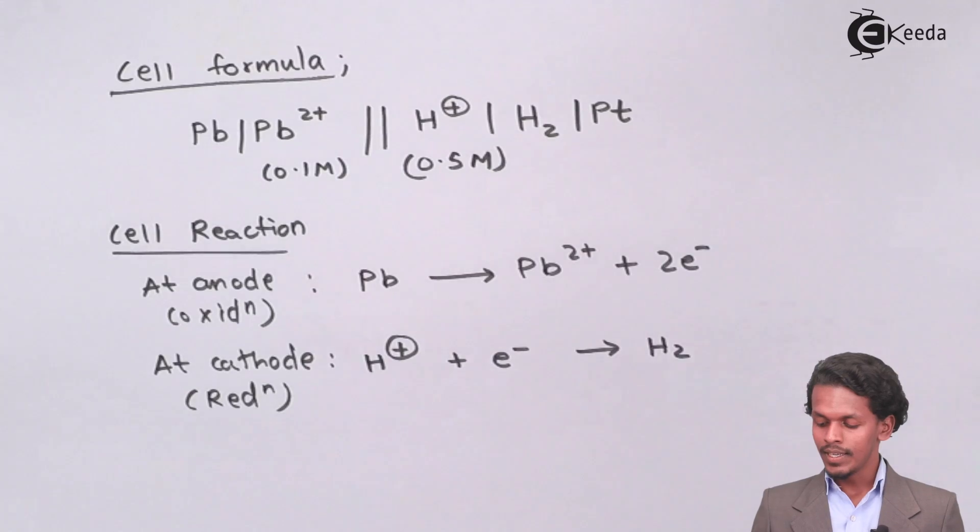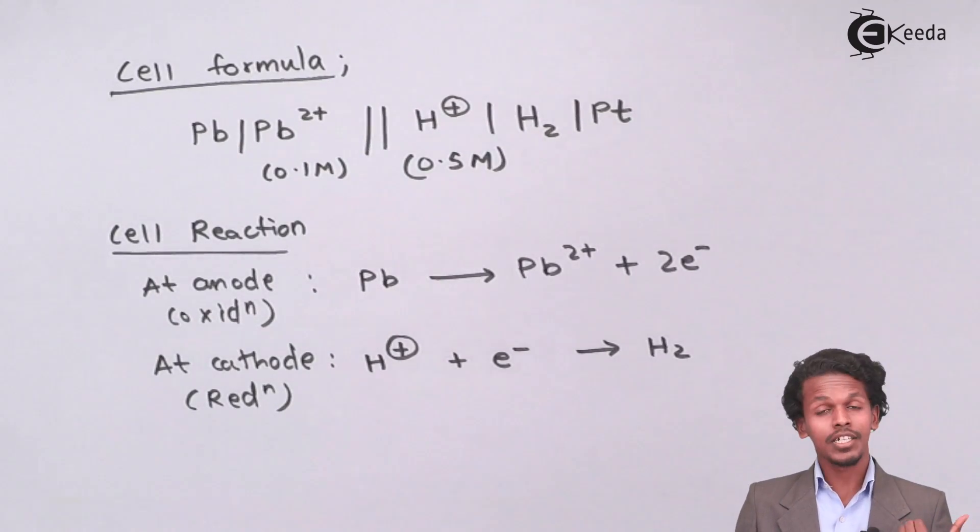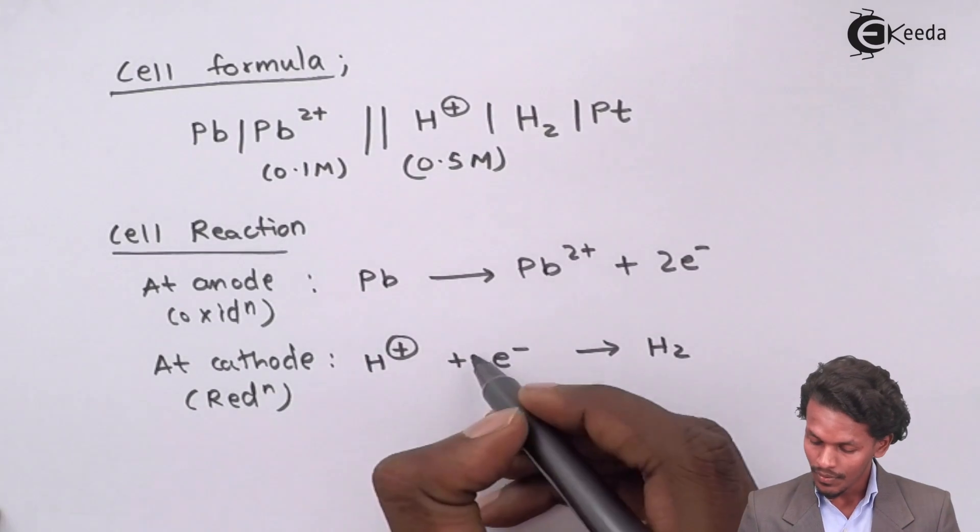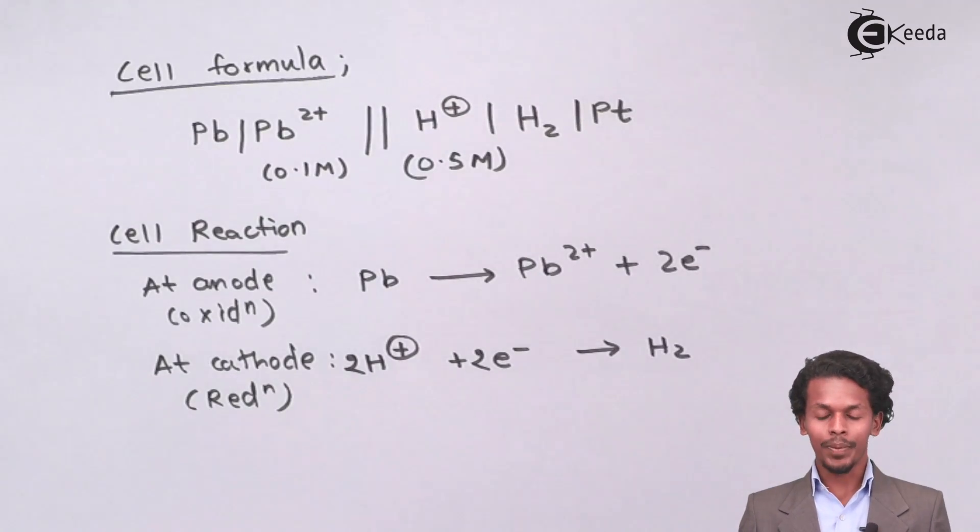In the cathode, when reduction is occurring, H plus will accept an electron to form H2. But the total number of electrons lost during oxidation is 2, while the total number of electrons gained in the reduction process is 1. To balance it, we will multiply by 2 and then H2 will be obtained.